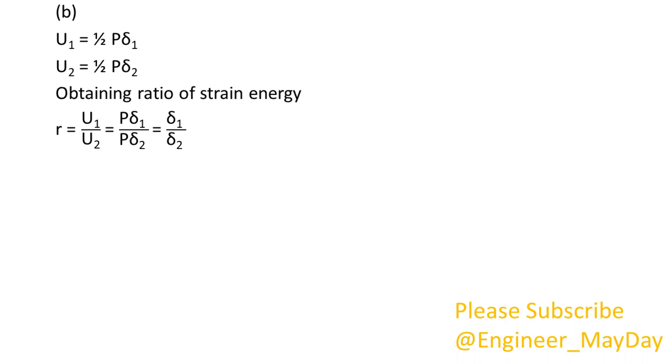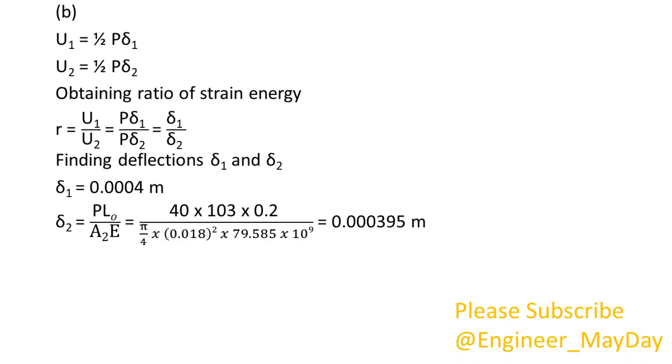Obtaining ratio of strain energy R equals delta 1 over delta 2. Finding deflections delta 1 and delta 2. Delta 1 equals 0.0004 meters. Delta 2 equals 0.000395 meters.